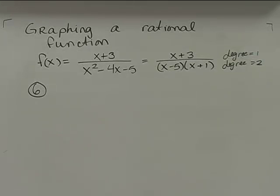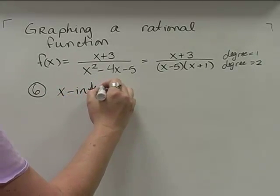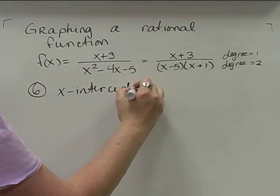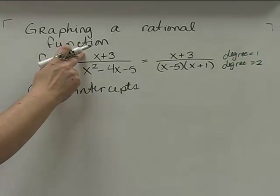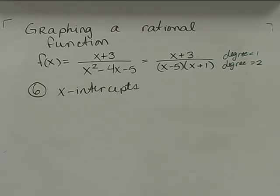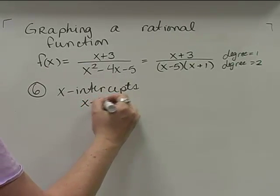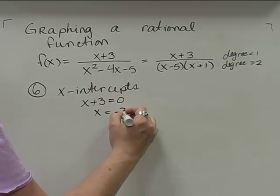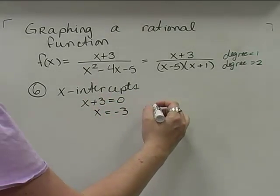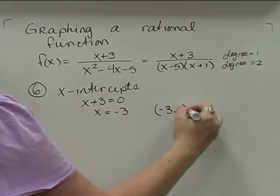Now what we're going to do is find the x-intercepts. To find the x-intercepts, we take P of x, or the top polynomial, and set it to zero to find where it hits the x-axis. So we have x plus 3 equals zero, which gives us x equals negative 3. So my one and only x-intercept is going to be at negative 3 comma zero.